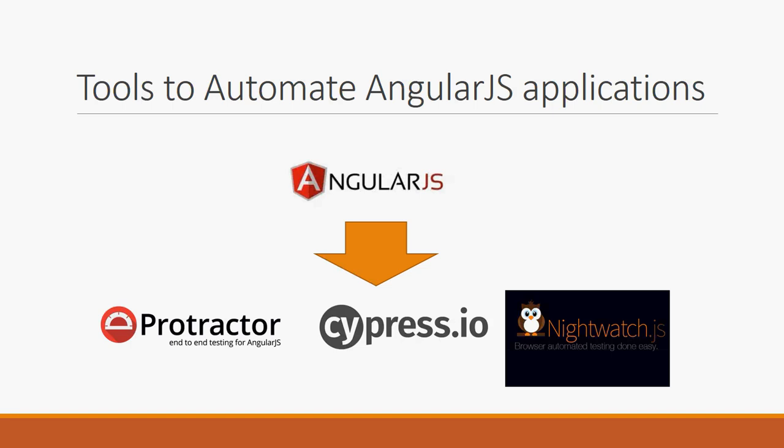For automating AngularJS applications there are several tools. Protractor uses WebDriver as a wrapper that extends AngularJS automation functionality. Cypress.io has its own execution engine and is far faster than Protractor. Nightwatch also relies on Selenium WebDriver as a wrapper to handle AngularJS applications.